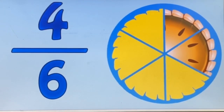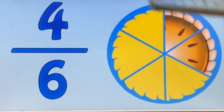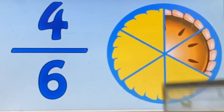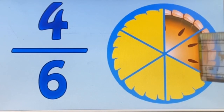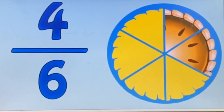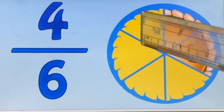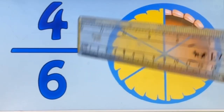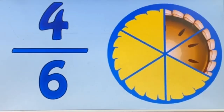Students, keep one thing in mind: if this pie is not divided into equal parts, you cannot make a fraction out of it. Any shape or region — if you have to write a fraction for it, it must be divided into equal parts. You can see in the picture all the parts are equal. If the parts are not equal, again you cannot write a fraction for this pie.